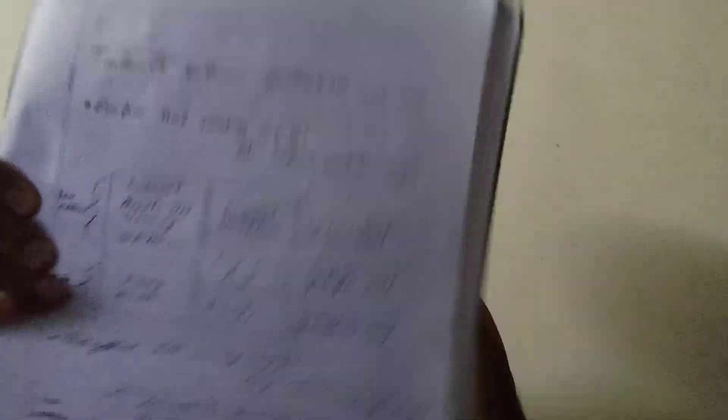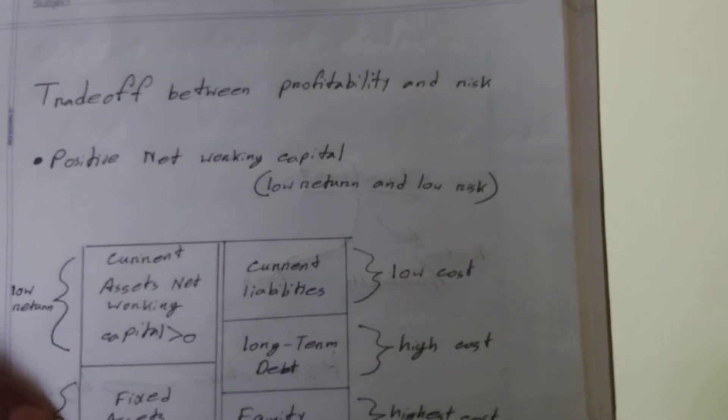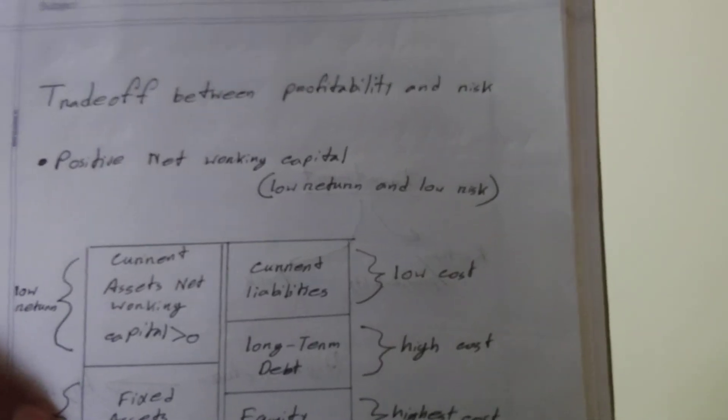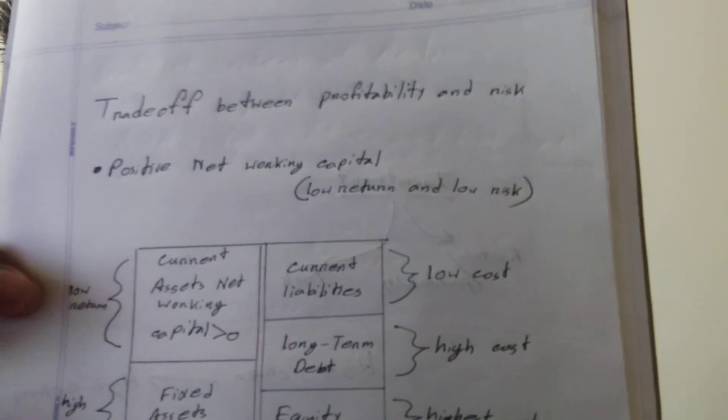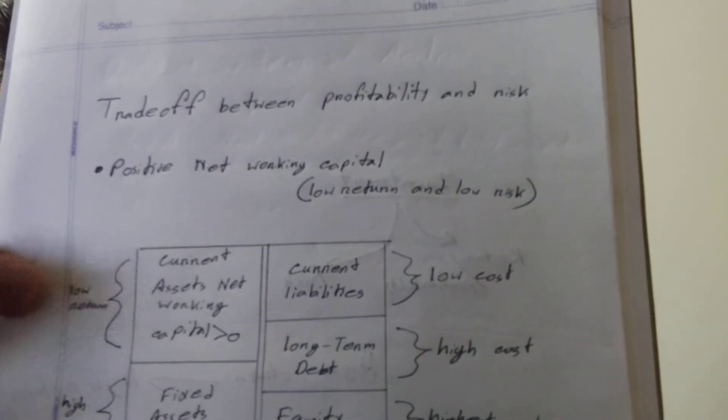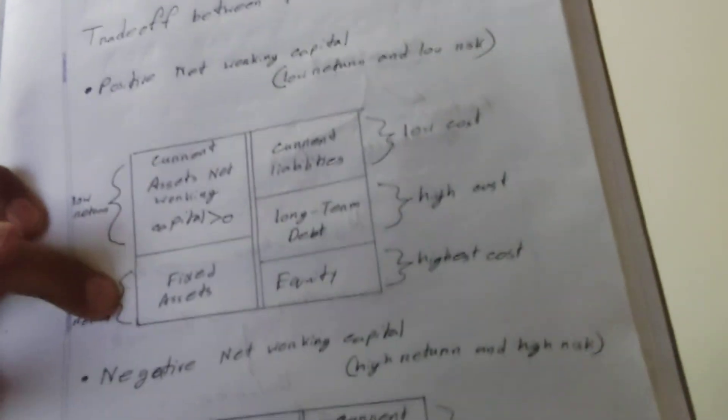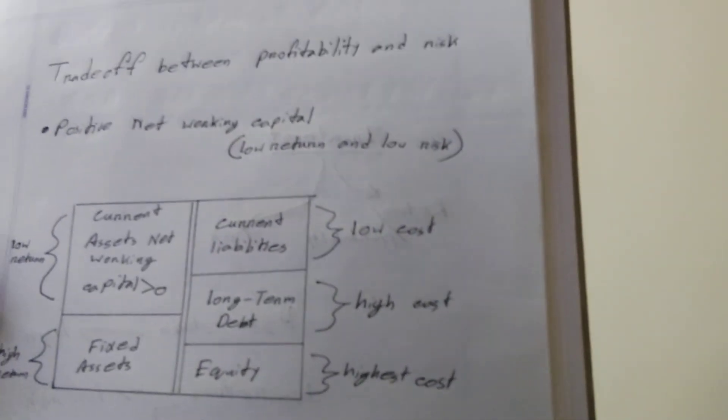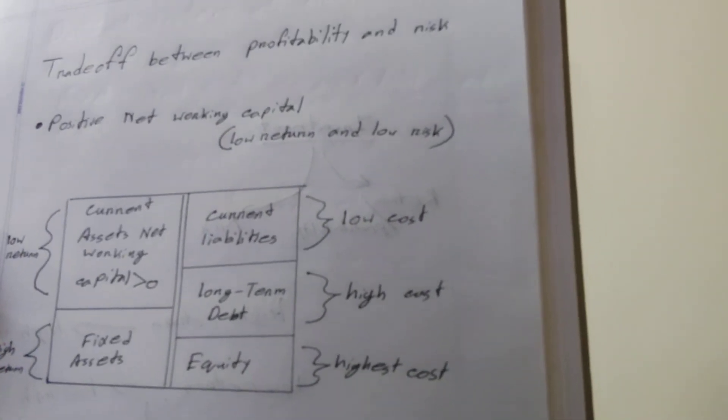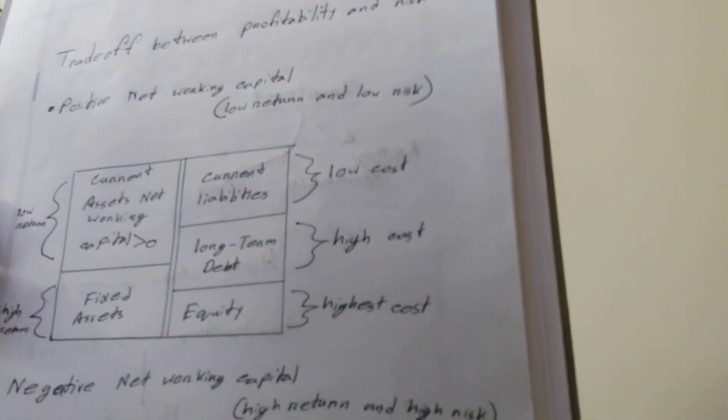Now let's look at the most important thing, which is the diagram here. First of all, if the networking capital is low return and low risk, then we can see in the first one: current assets, networking capital is greater than zero, which is low return. And down here, fixed assets have a high return. On the other side, we have current liabilities with low return and long-term debt with high cost, then there's equity which has the highest cost.